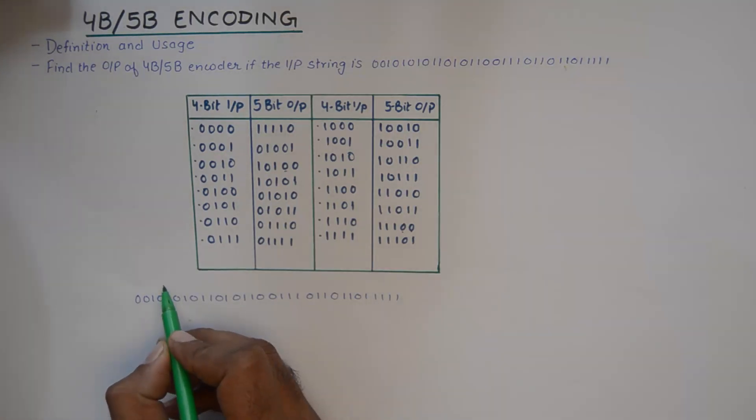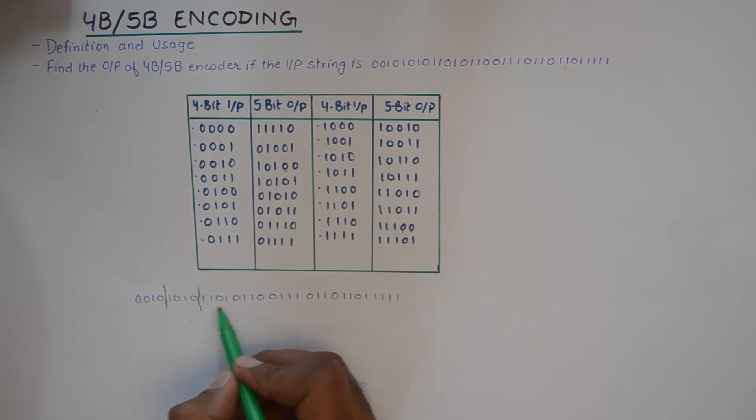you need to divide this string into sets of 4 bits. So that is how you divide it.